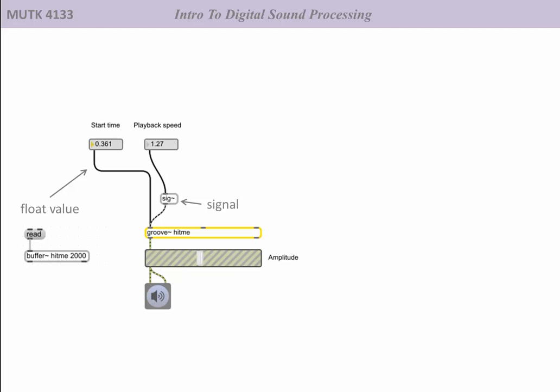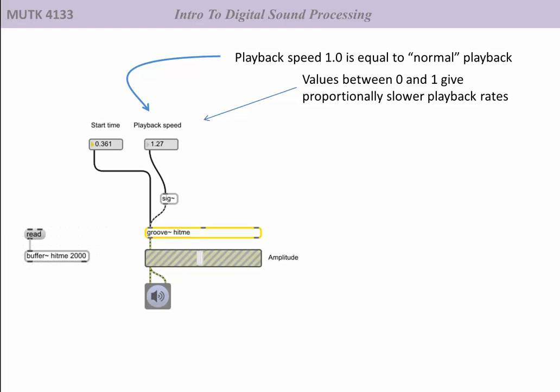When groove~ receives a playback speed of 1, that's telling it to playback at normal speed. Speed values between 0 and 1 will give you a slower than normal playback. For example, 0.5 will give you a playback of half speed. 0.25 would give you one quarter speed.